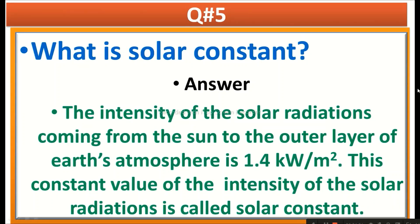Answer is: the intensity of the solar radiations coming from the sun to the outer layer of the earth's atmosphere is 1.4 kilowatt per meter square. This constant value of the intensity of the solar radiation is called solar constant.